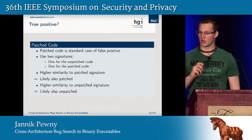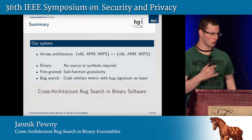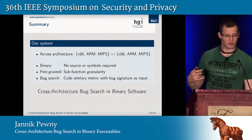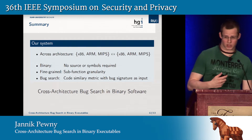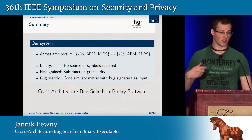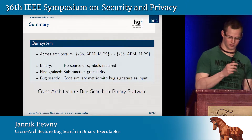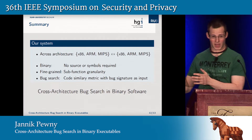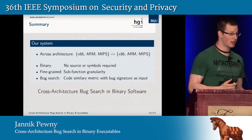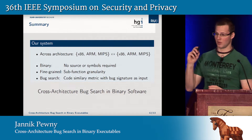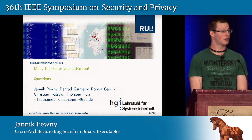In summary: we work on binaries, no source code required, no symbols required. We have a very fine-grained sub-function granularity code similarity metric. By using that metric with a bug signature as input, we can use it for bug search. And maybe the coolest thing: we can do so across architectures — from x86 to MIPS, from x86 or MIPS or ARM to any of the other architectures — and it still works reasonably well. In the end, we achieve cross-architecture bug search in binary software. That concludes my talk, and I'd be delighted to answer your questions.